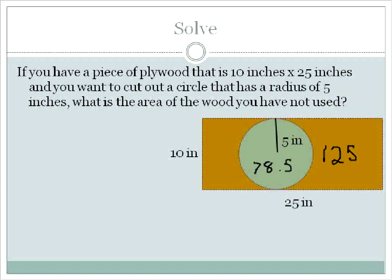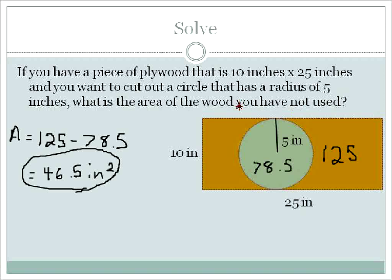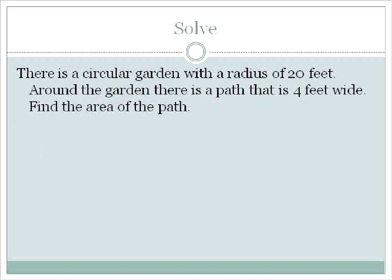So now all I need to do to find the accurate, the full area of plywood that I'm not going to use, I'll take my 125 and I will subtract 78.5 from that and get my final area of 46.5 inches squared. That is the area of the wood that I have not used. In other words, the mustard green color of wood here.